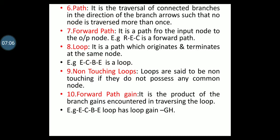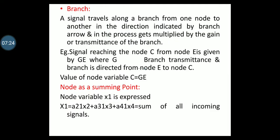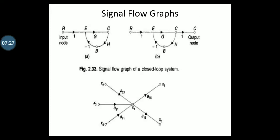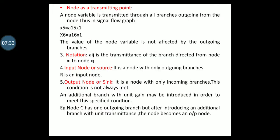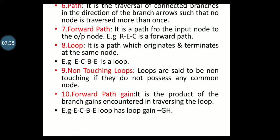A path is a traversal of connected branches in the direction of the branch arrows such that no node is traversed more than once. Next, forward path: it is a path from the input node to the output node. In this diagram, R, E, C are in the forward path, so R-E-C is the forward path.